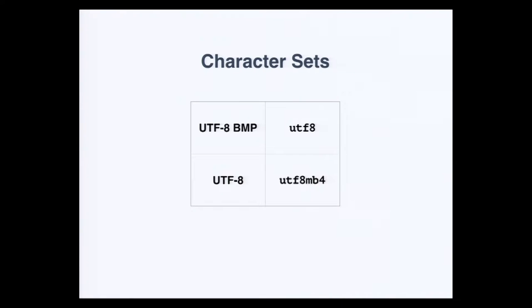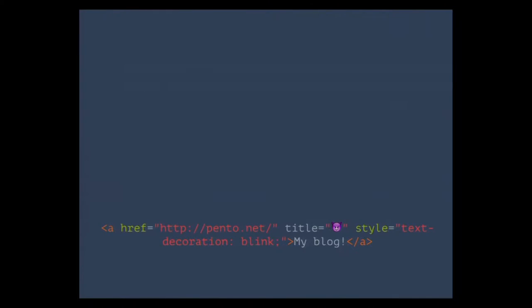Any character outside of that — for example, emoji — is not supported by the UTF-8 character set. But you can easily type an emoji character. So how does WordPress handle it when you try to save an emoji character? Take this slightly contrived but not particularly unusual comment. It's a link to a site, it has a title, it has some slightly unsavory styling. But apart from that, it all looks fine.